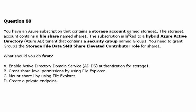The storage account contains a file share named share one. The subscription is linked to a hybrid Azure Active Directory tenant that contains a security group — so the security group is an Active Directory object — named group one. You need to grant group one the Storage File Data SMB Share Elevated Contributor role for share one.